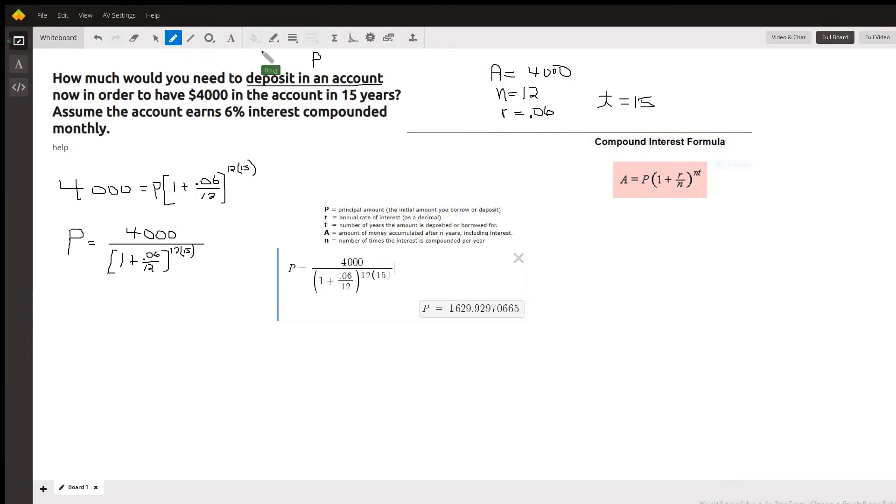Okay, here is the compound interest formula right here, where A is the amount of money you're going to end up with if you deposit P dollars at an interest rate of, in this case, 0.06, because R is supposed to be as a decimal.